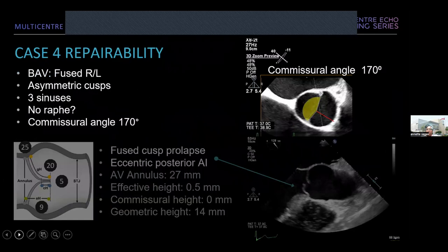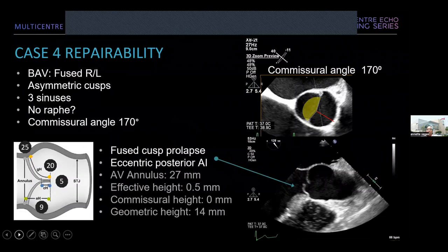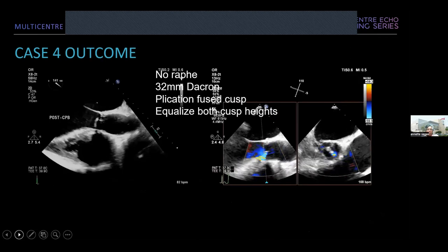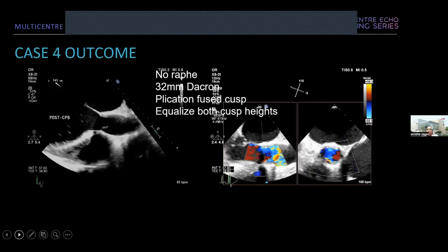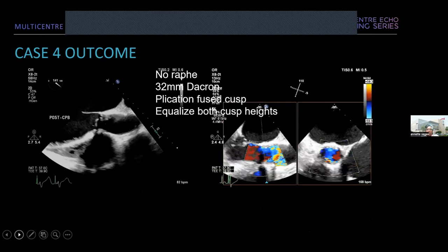Assessing repairability: fusion of cusp, asymmetric cusp, three sinuses, no raphae, commissural angle closer to 180 degrees (more favorable). Annulus is not as dilated at 27 mm. Effective height at the prolapsing cusp is 0.5 mm; for bicuspid we take the measurement of the non-fused cusp. There is no coaptation height because there is no coaptation. Geometric height of the non-fused cusp is only 14 mm — a bit short. Note that for bicuspid aortic valves the geometric height is actually longer than for tricuspid. The surgeon proceeded with a valve sparing procedure: no raphae was found, a 32 mm Dacron graft was placed, the fused cusp was plicated, and both cusp heights were equalized.